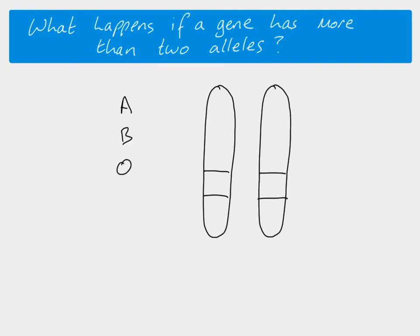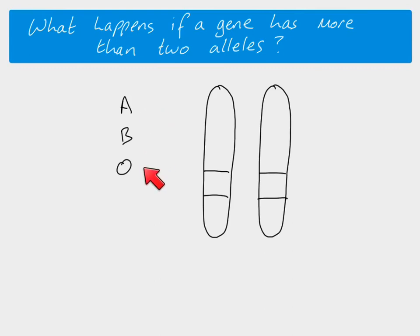The problem is we can't write it like that, because the letter tells us what the gene is. If we wrote it that way, we would be saying that these are three different genes — but they're not. They're all versions of the same gene; they're alleles. So we can't write it like this.